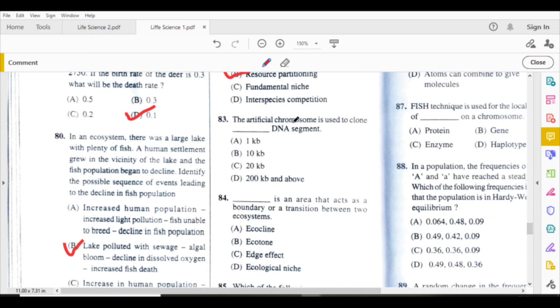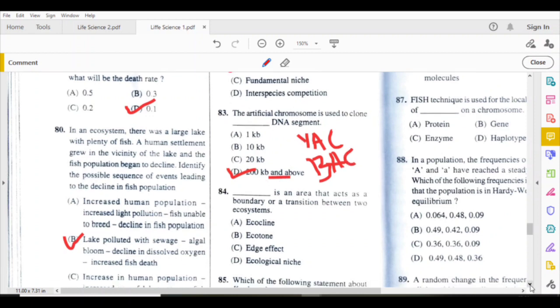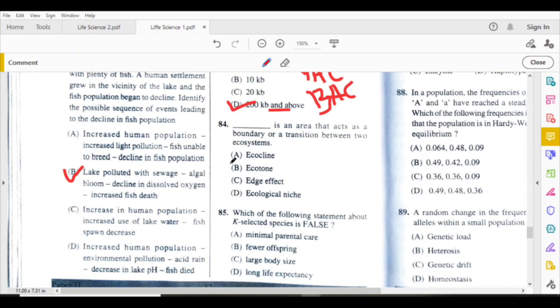The artificial chromosome is used to clone 200 KB and more than 200 KB DNA segment. Ecotone is an area that acts as a boundary or a transition between two ecosystems.